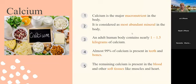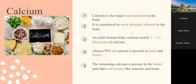When we talk about calcium, you must be thinking about milk and dairy products. We will discuss the important functions that calcium plays in our body and the other sources of calcium. The major macro mineral in your body is calcium — it's very abundant. Almost 99 percent of your calcium is present in your teeth and bones, and the remaining calcium is present in your blood and other soft tissues like muscles and heart.